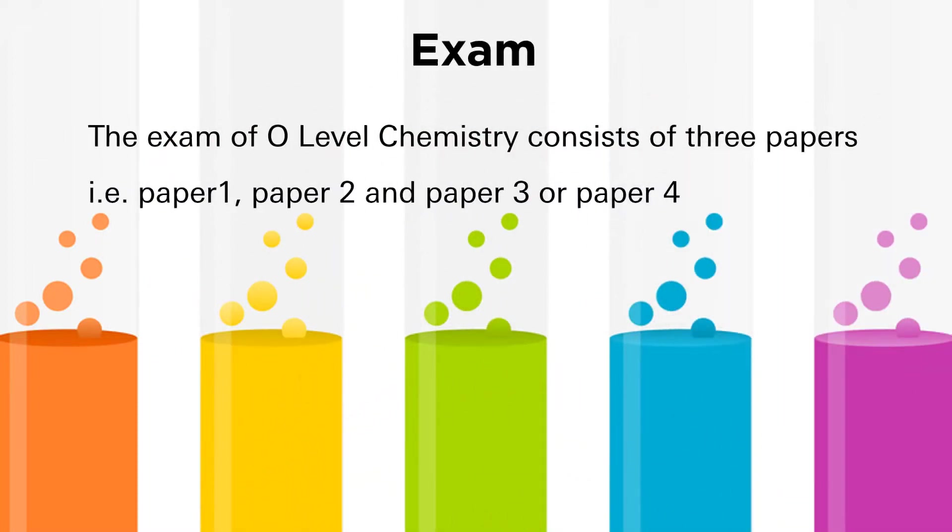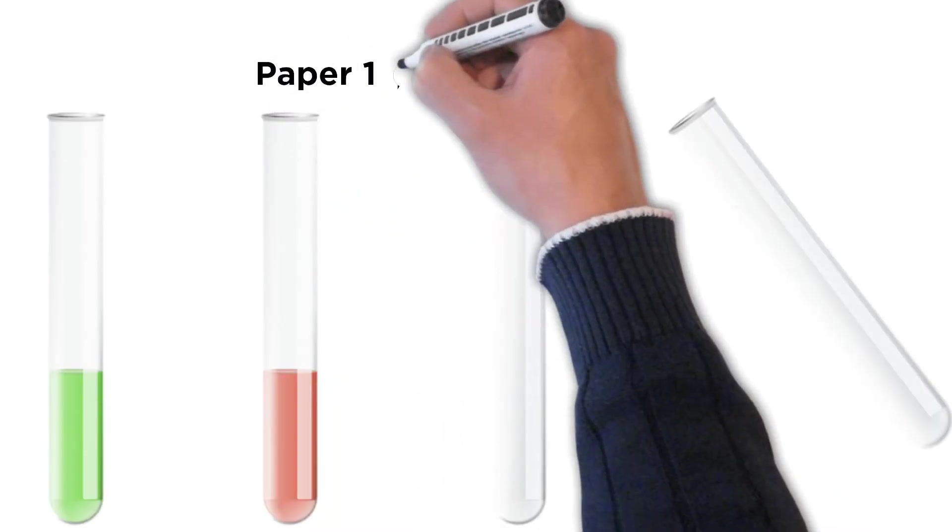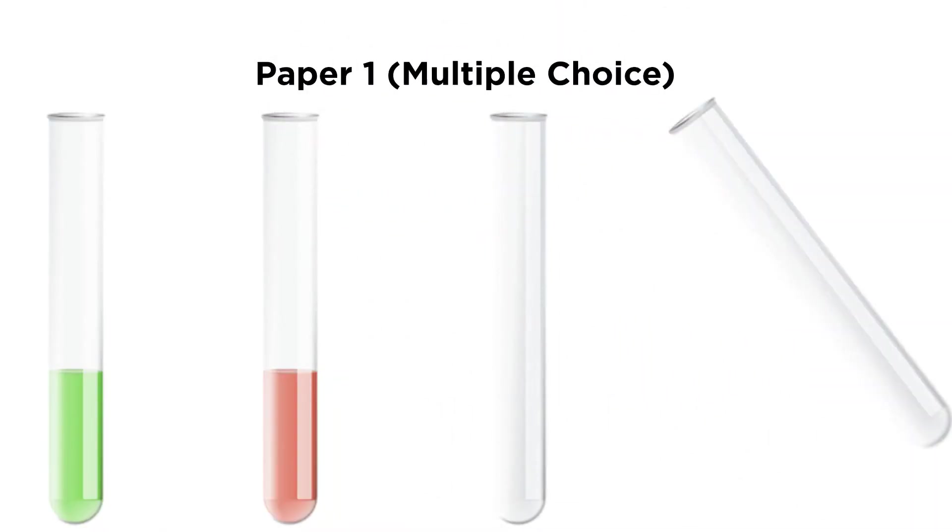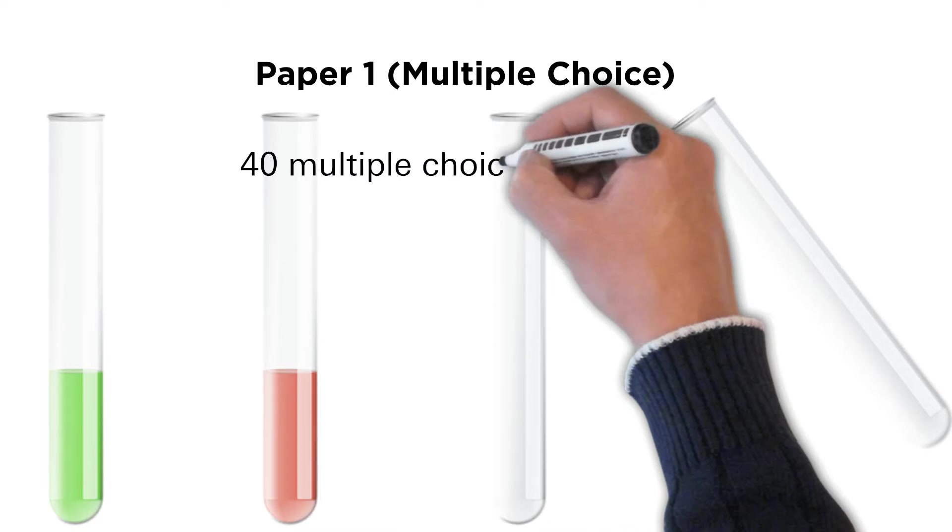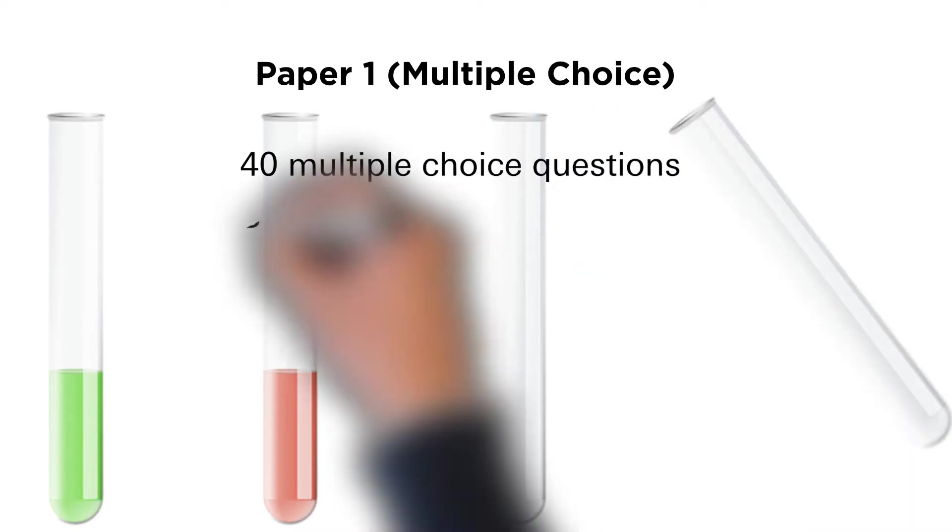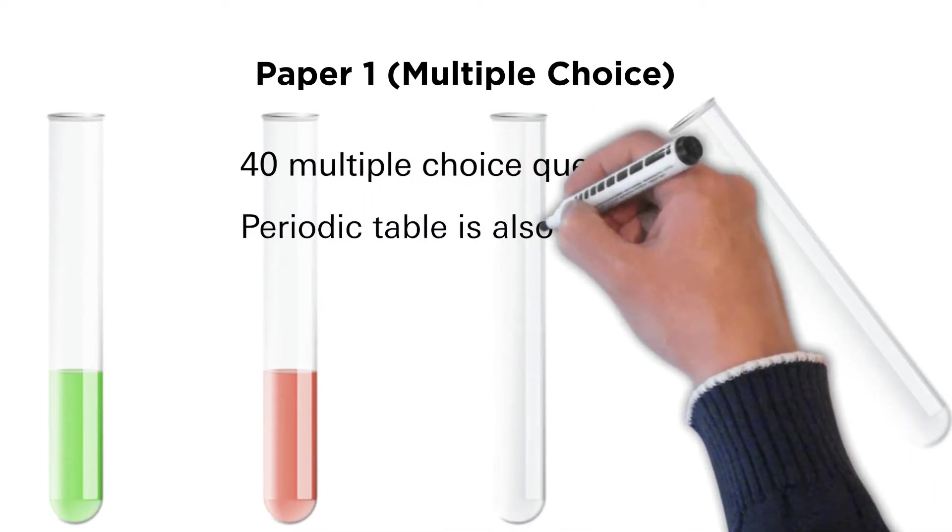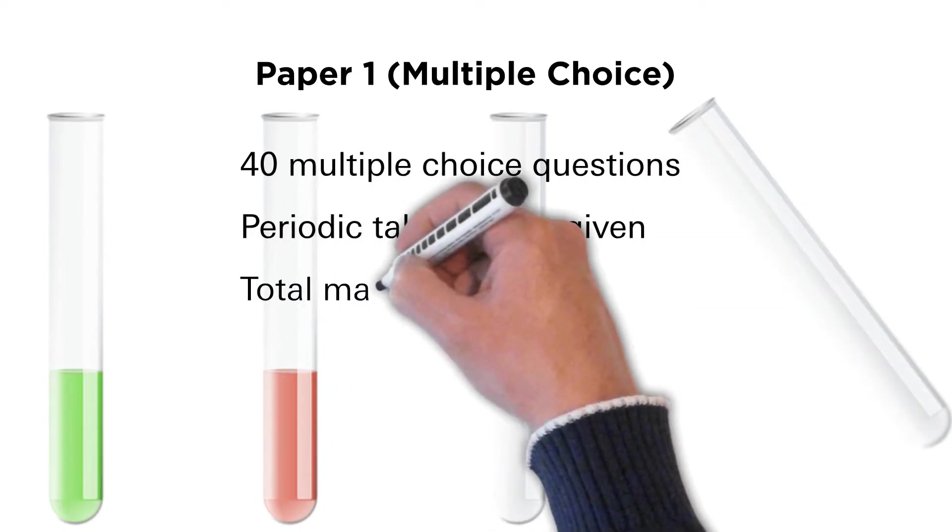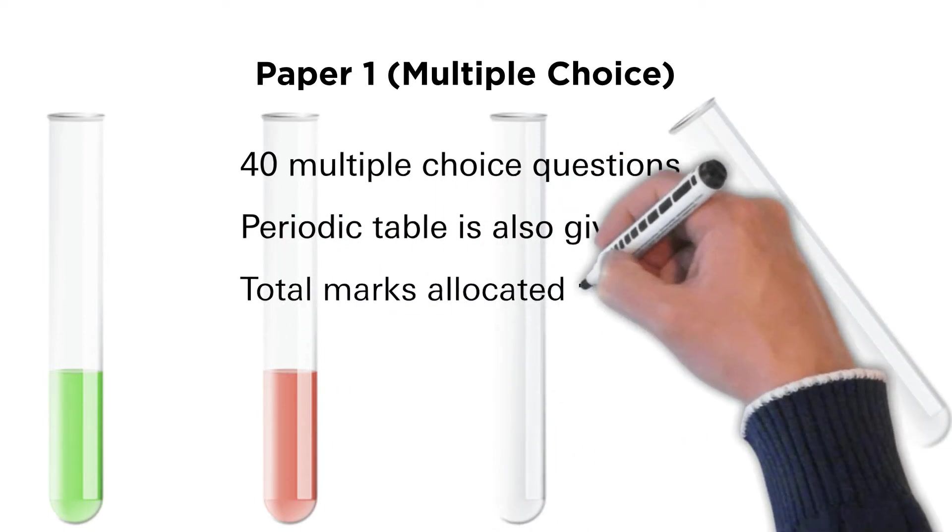Paper 1 Multiple Choice: Students have to answer 40 multiple choice questions in this section. A copy of the periodic table is also given to the students as a part of the paper. Total marks allocated for this paper are 40.